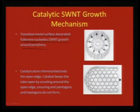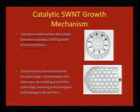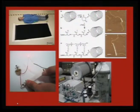Transition metal surface-decorated fullerenes nucleate growth around the periphery, and the catalyst keeps coming out along with the growth, with catalyst atoms sticking to the edges of the carbon nanotube. The catalyst atom chemisorbs onto the open edge, keeping the tube from closing around the open edge and ensuring that pentagons and heptagons do not form. This is one reason why long-chain single-wall nanotubes are possible with this sort of mechanism, and the field has grown tremendously with this basic understanding of how to make single-wall and multi-wall nanotubes.